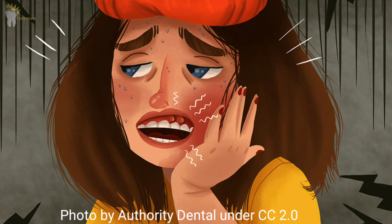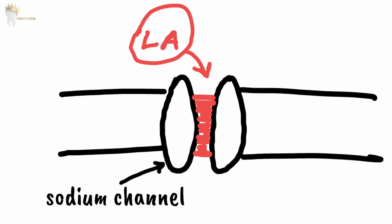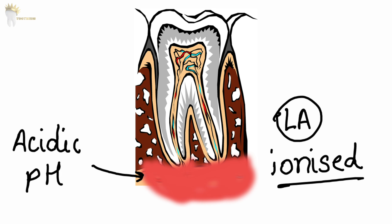The contraindications include infection or acute inflammation in the area of injection. This applies to any local anesthetic nerve block because, as covered in the mechanism of local anesthesia video, local anesthetics work by blocking sodium channels. Infection or inflammation creates an acidic environment where local anesthetic molecules become ionized — electrically charged — and electrically charged species cannot cross biological membranes, preventing the drug from reaching the sodium channels.